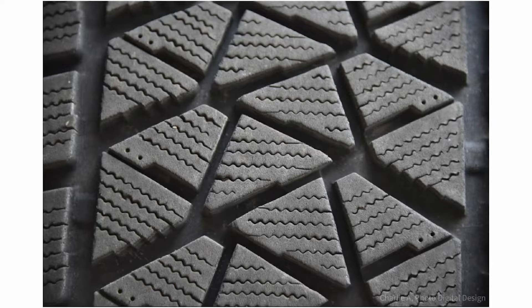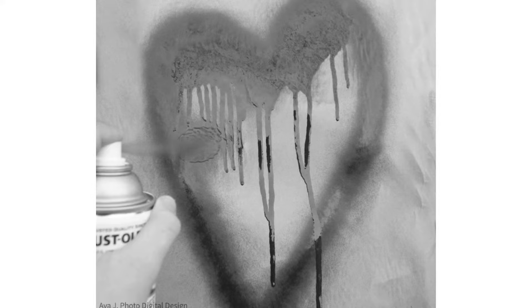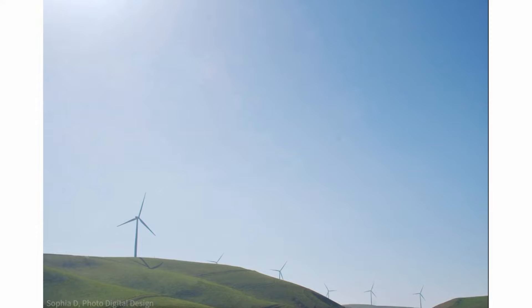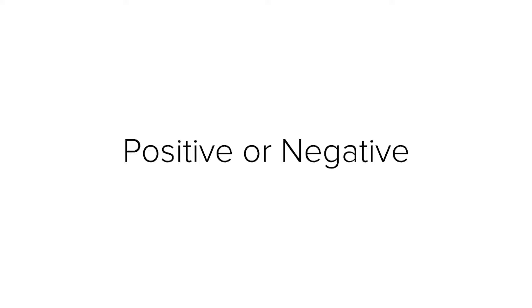Shapes are formed when a line closes in and outlines a specific area. Shapes are two-dimensional, with length and width. Shapes can also be seen because of changes in value or color, creating an implied line around the shape.